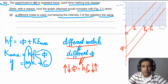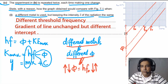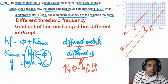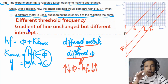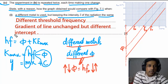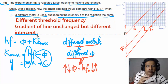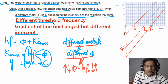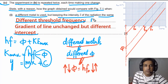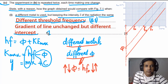In your answer, mention that the gradient of the line is unchanged because gradient equals Planck's constant. However, the y-intercept is different because different metals have different work functions or different threshold frequencies. You need to state both the observation (different intercept) and the explanation (different work function). This scores two marks: one for the statement and one for the explanation, both B marks.